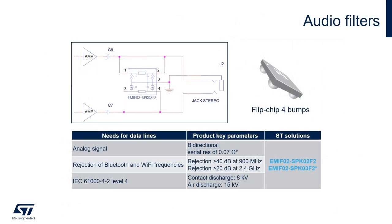Another application that can be handled by an ASIP consists in audio filtering. The EMI-F02-SPK02F2 consists in a tiny integrated EMI filter for audio applications, rejecting the typical GSM, Bluetooth, and Wi-Fi frequencies to avoid any unwanted noise in the sound. In addition, the device also provides full system-level ESD protection.